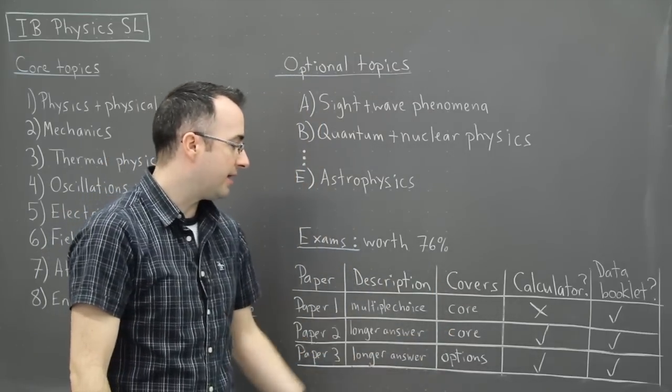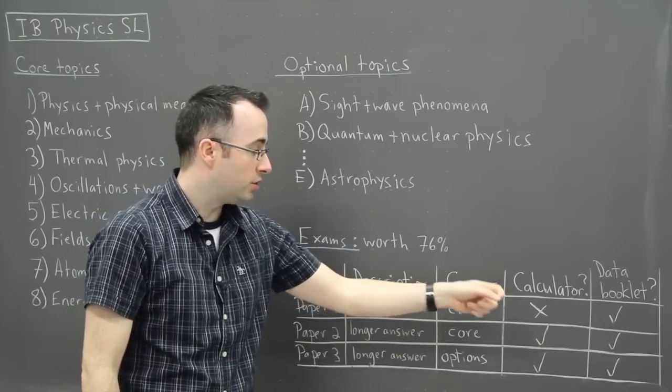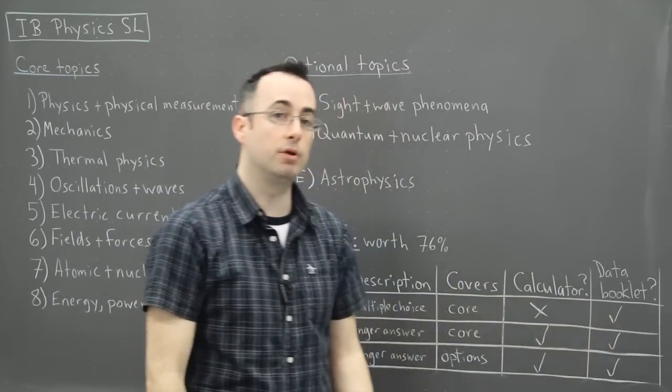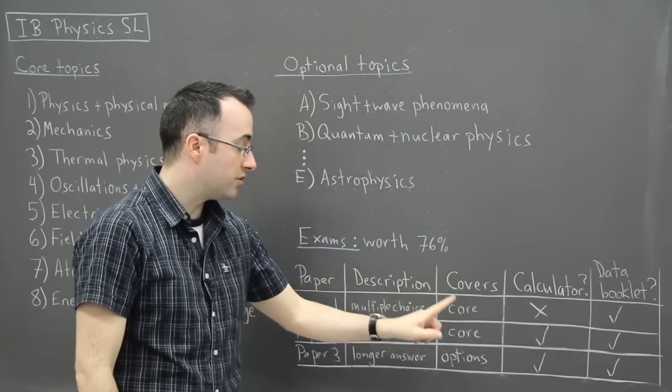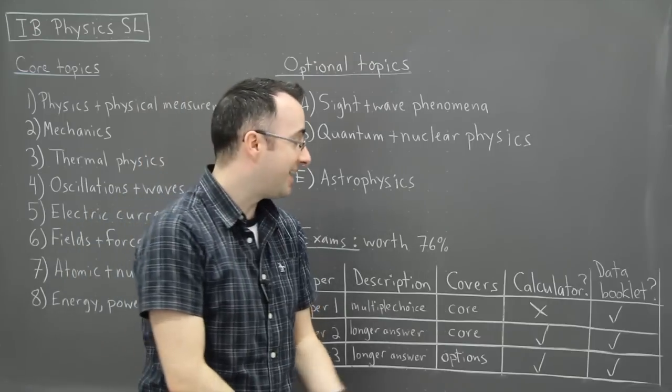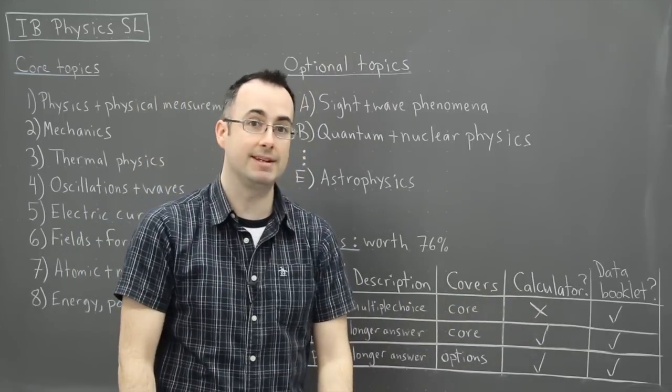Now paper two is a longer answer, and it still covers the core. You are allowed a calculator for that one. And you are still allowed a data booklet. And paper three is longer answer, covers the two optional topics. And you are allowed a calculator for that. And it still does allow the data booklet.